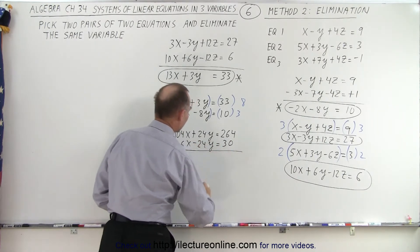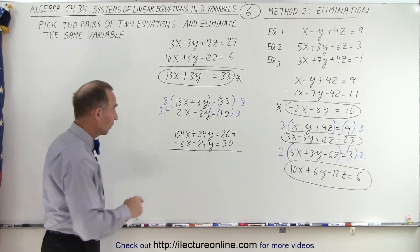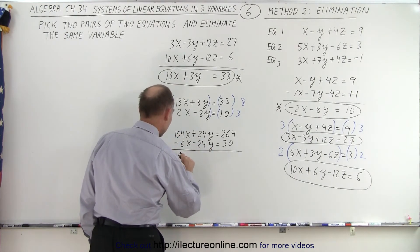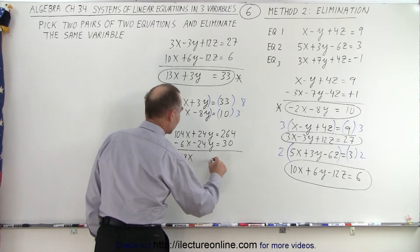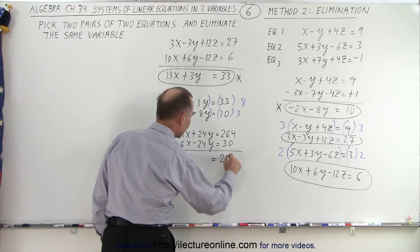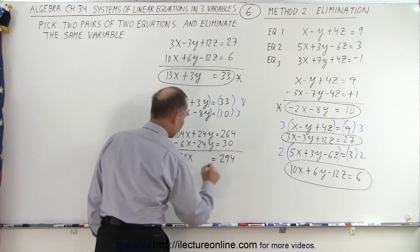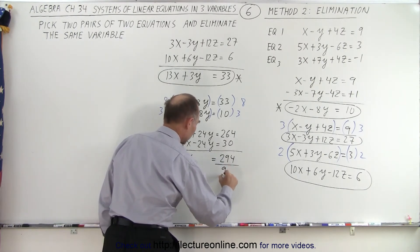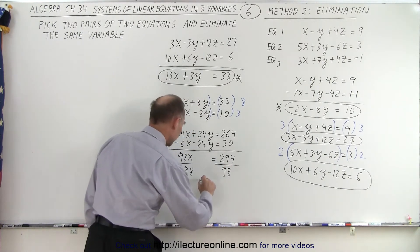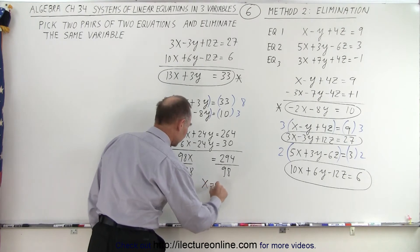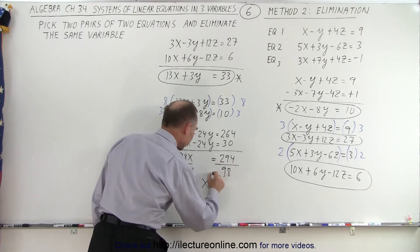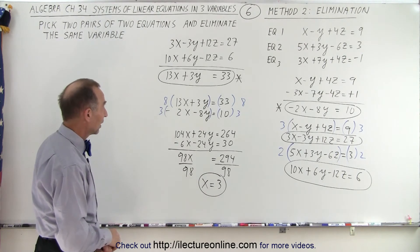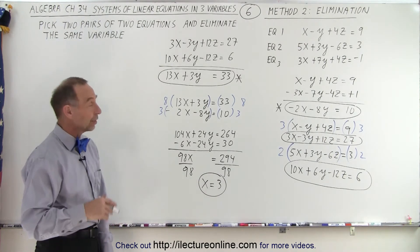Now we add those two equations together. Notice that the y's drop out. We end up with 98x is equal to 294. Now we can divide both sides by 98, and x is equal to 3. So there we have our first variable, x.